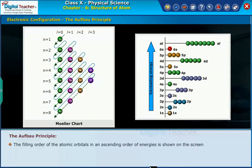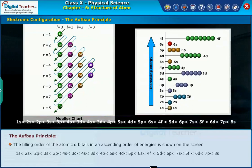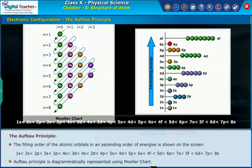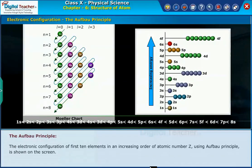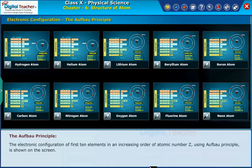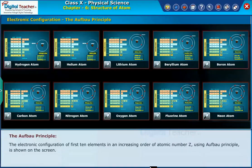The filling order of the atomic orbitals in ascending order of energies is shown on the screen. Aufbau principle is diagrammatically represented using Moeller chart. The electronic configuration of first ten elements in an increasing order of atomic number Z using Aufbau principle is shown on the screen.